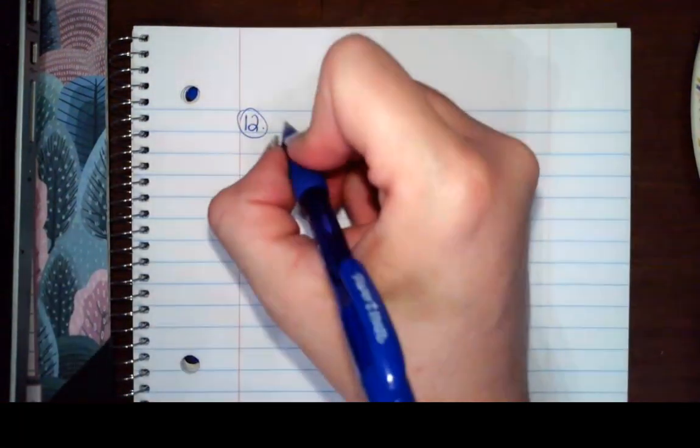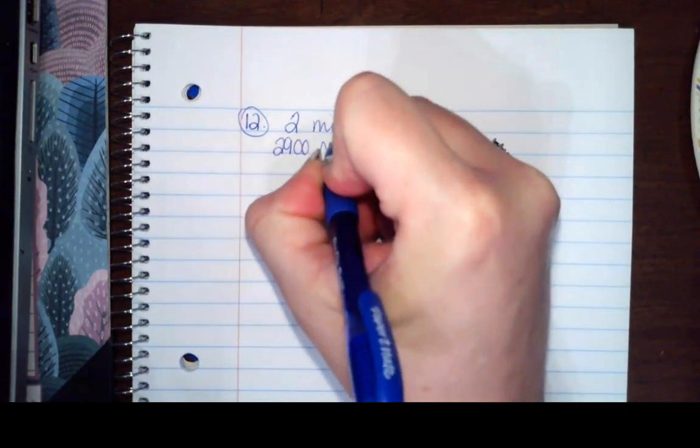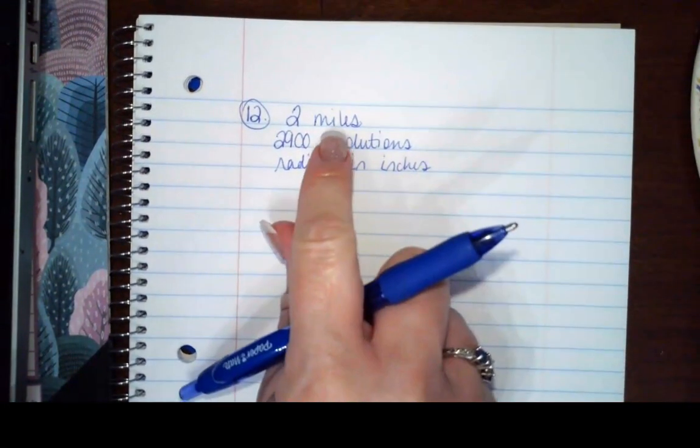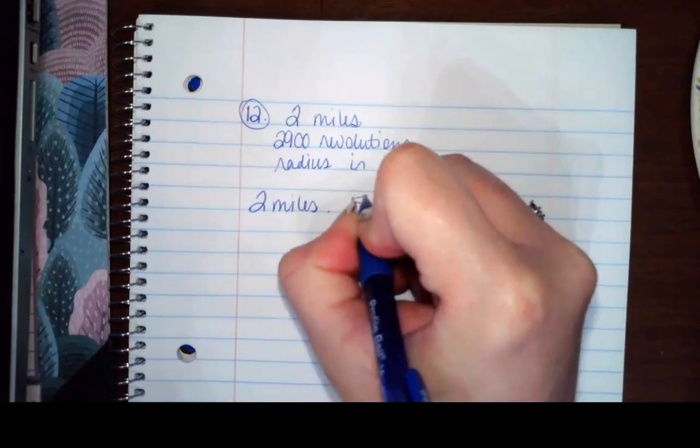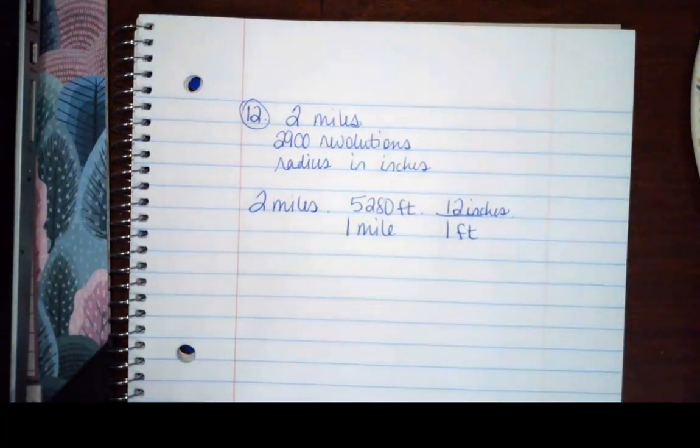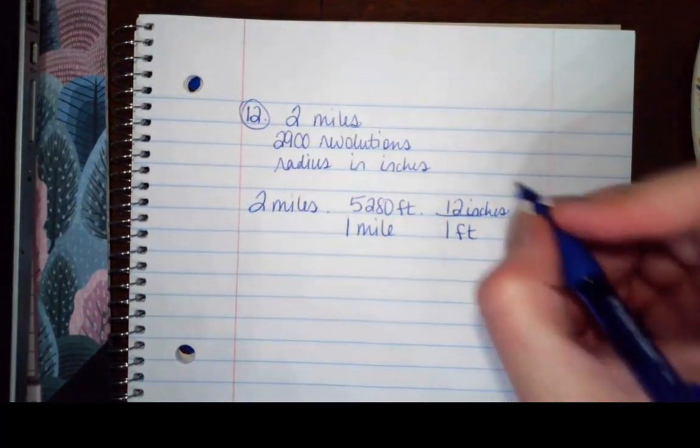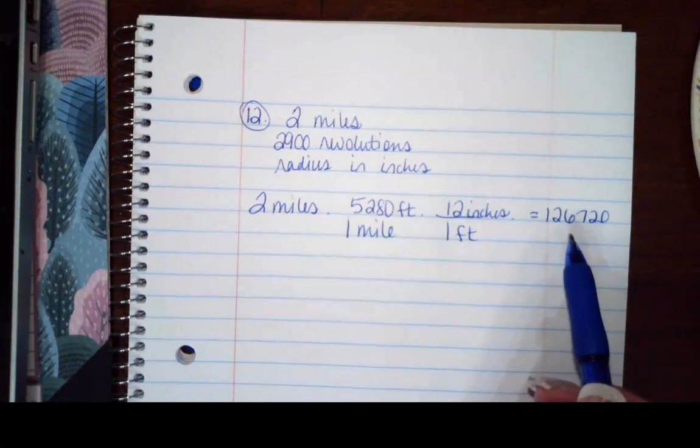So for the next one, number 12, we have a car traveling 2 miles. Its tires make 2,900 revolutions. So I want to know what the radius is in inches. The first thing I should do is change miles into inches. So I have 2 miles, and 1 mile is 5,280 feet, and 1 foot is 12 inches. So that will give me 2 times 5,280 times 12, which gives me 126,720 inches is what this thing is traveling.